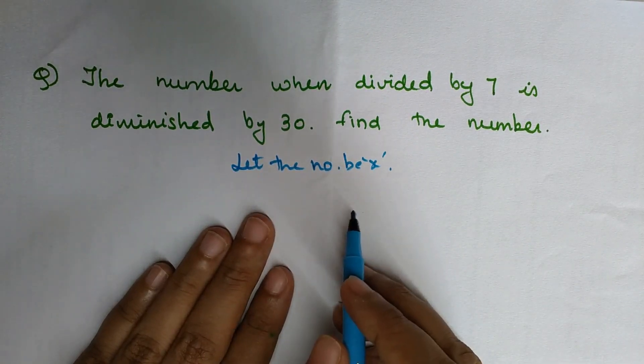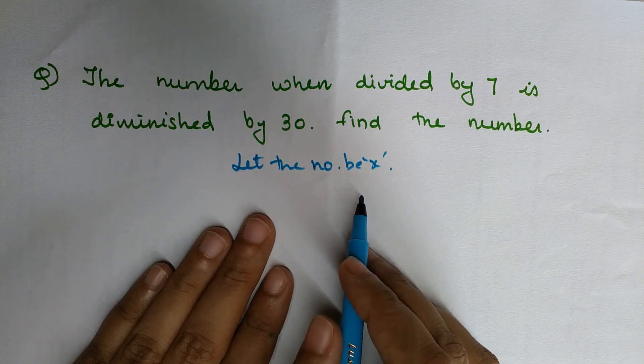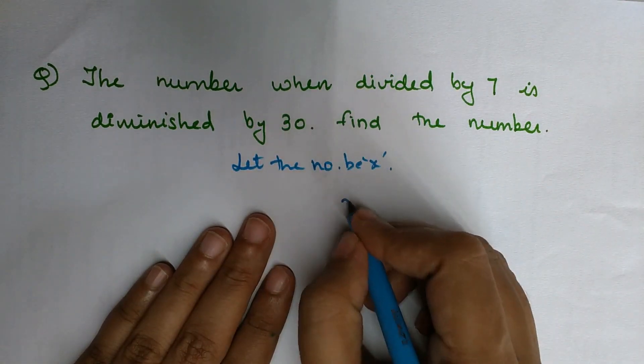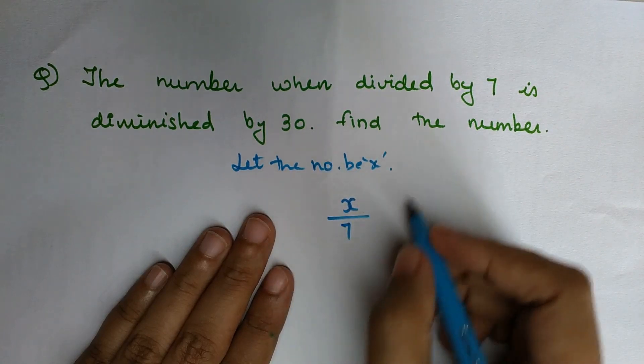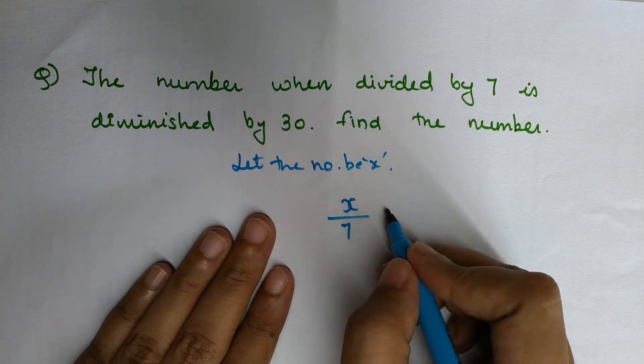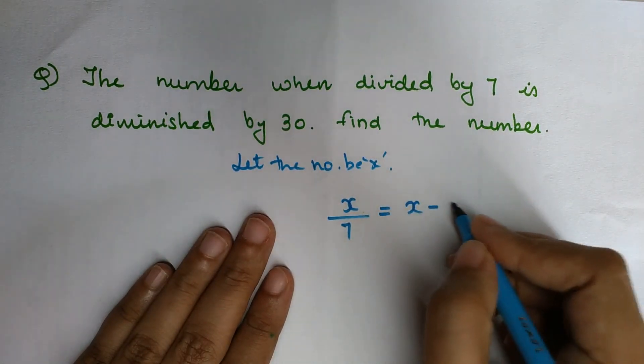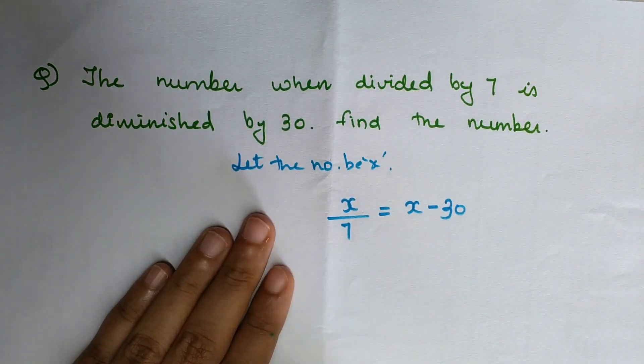...have to keep it in your mind. You don't have to write all these statements because that would be a waste of time. So the number divided by 7 is x/7. Then we say it is diminished by 30, which means x - 30. So x/7 = x - 30.